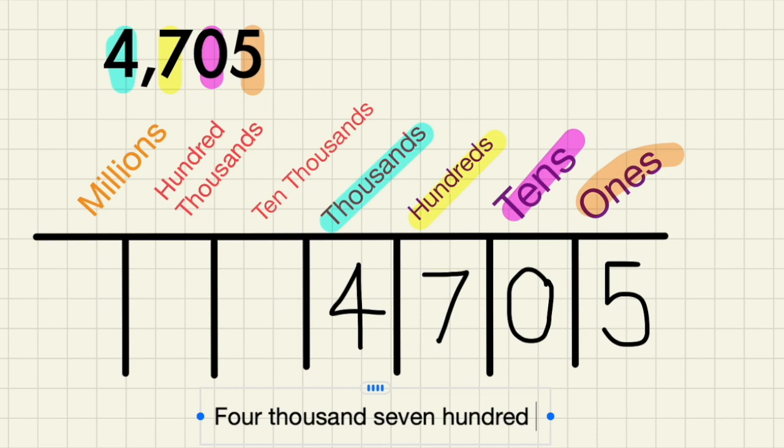So we write 4,700 and because zero in the tens place is nothing we can just skip that and write 5. So our word form for this number is 4,705.